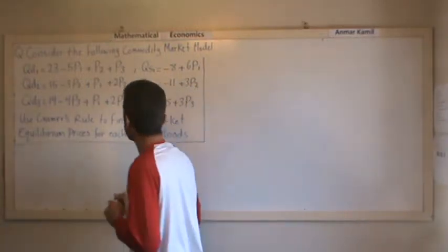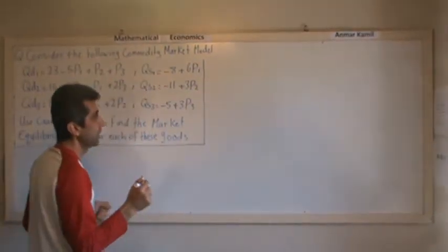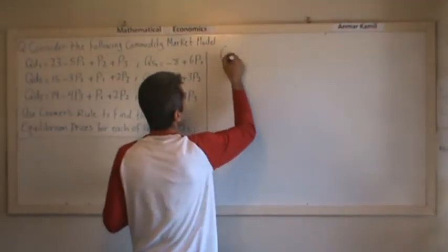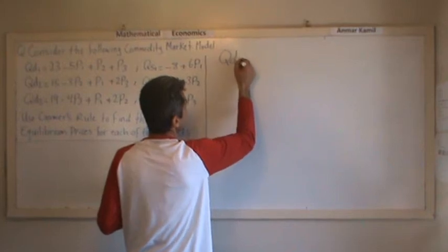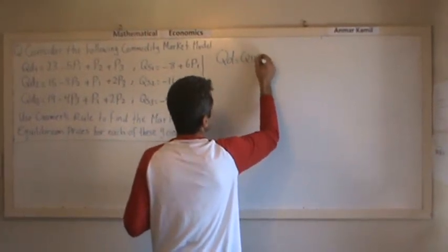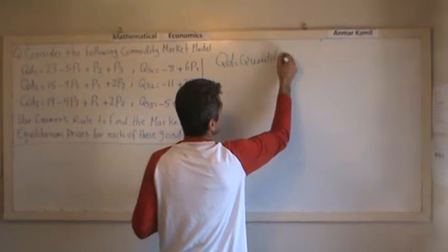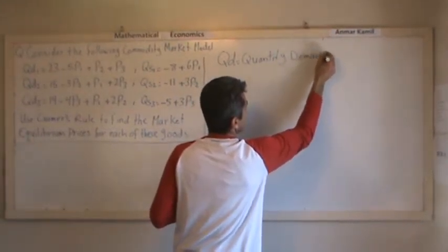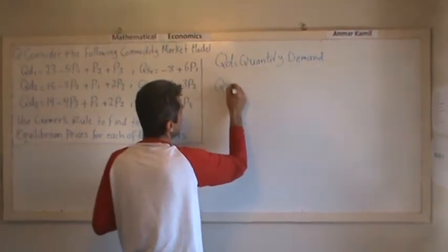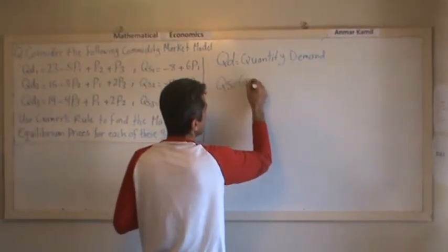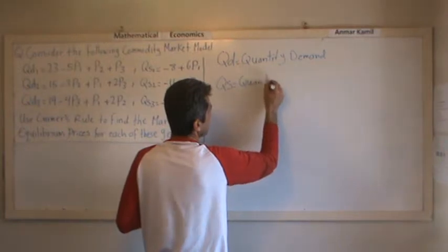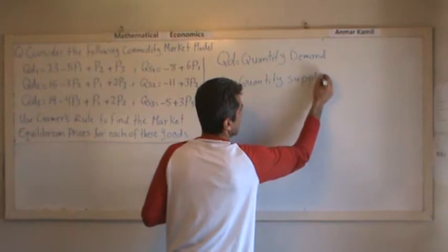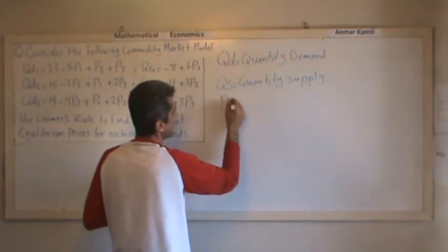Before I show you how to solve the problem, I'm going to define some variables. QD is the quantity demanded, QS is the quantity supplied, and P is the price.